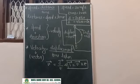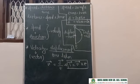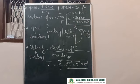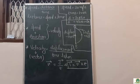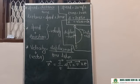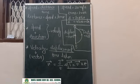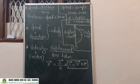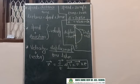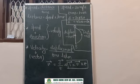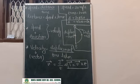Good morning students. In previous lectures of chapter Motion, we covered rest and motion definitions, distance and displacement, and one physical quantity related to distance — that is speed. Speed is equal to distance divided by time. The definition of speed is: total path travelled by an object per unit time.